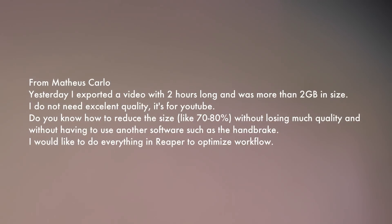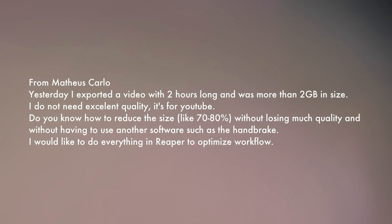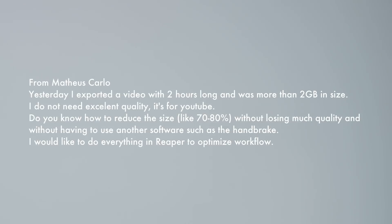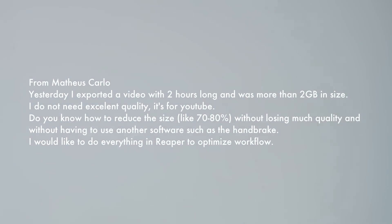Next question comes from Matthias Carlo: yesterday I exported a video that was two hours long and was more than two gigabytes in size. I don't need excellent quality — it's for YouTube — but do you know how to reduce the file size by 70 or 80 percent without losing much quality and without using another software such as Handbrake? I'd like to do everything in Reaper to optimize workflow. A two-hour video that's two gigabytes in size is already a tiny file. For YouTube I would actually try to get even better quality than that — increase your bitrate so you're getting smoother video that's a lot easier to watch.